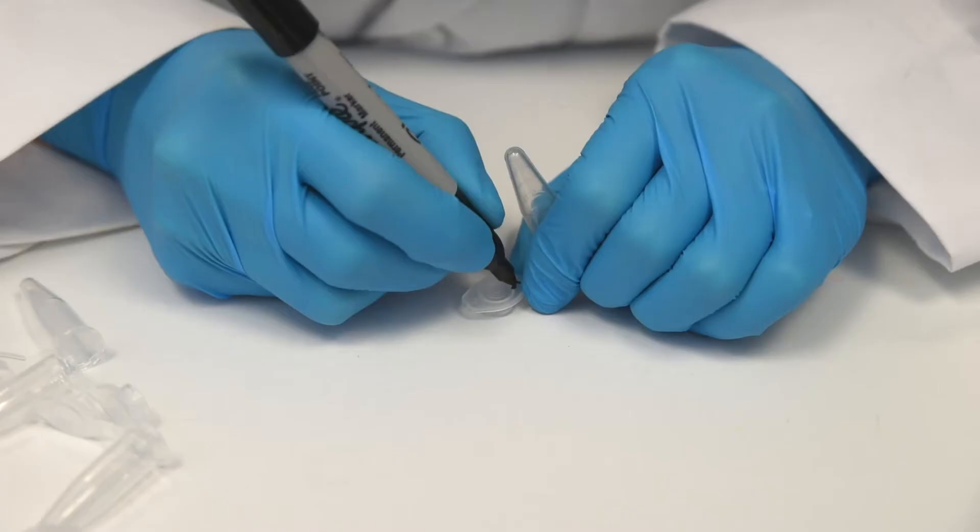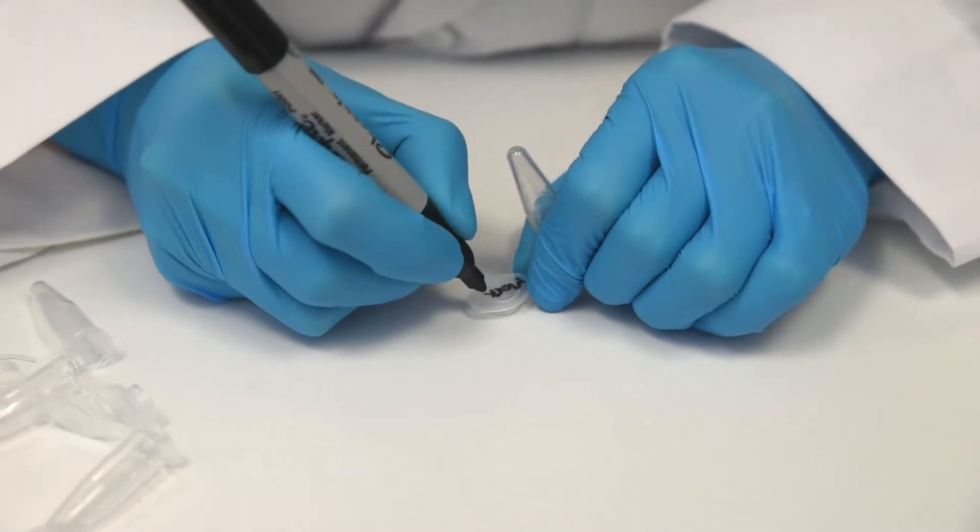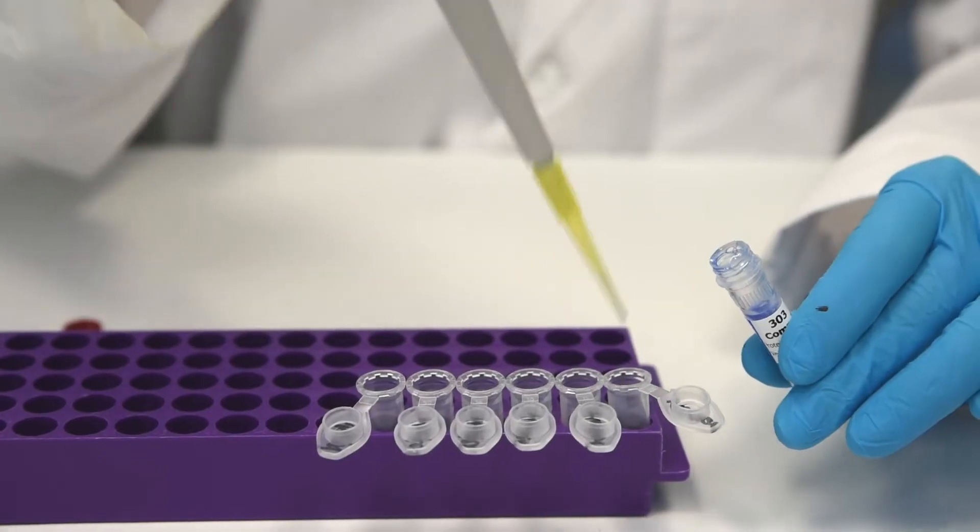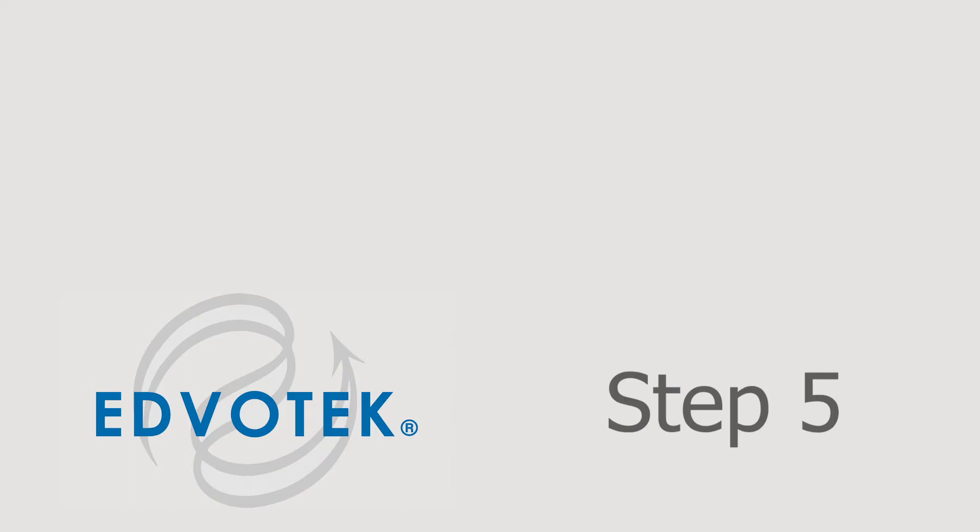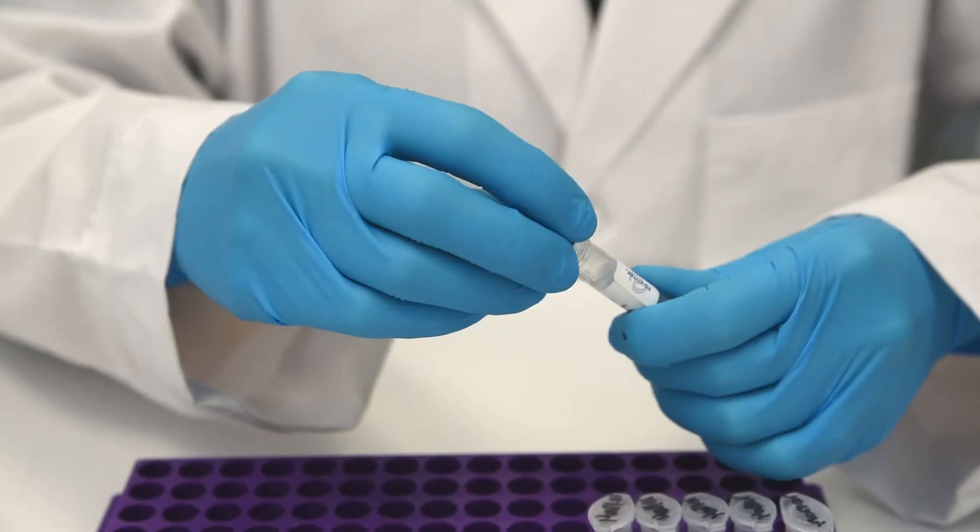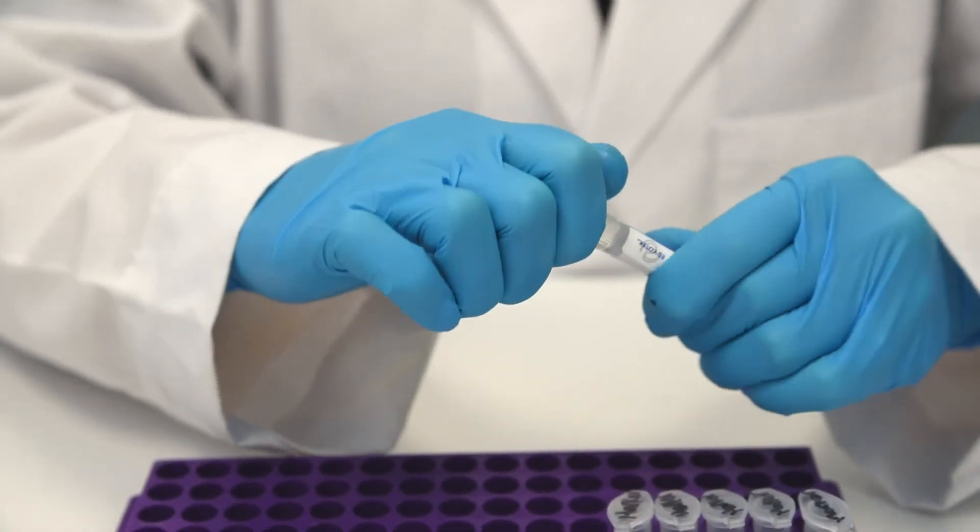Step four, the markers can be aliquoted for each student group or students can share the rehydrated sample stock tube. Step five, store any unused portion of reconstituted sample at minus 20 degrees Celsius. Step six, dispense 50 microliters of protein denaturing solution into 10 microcentrifuge tubes.